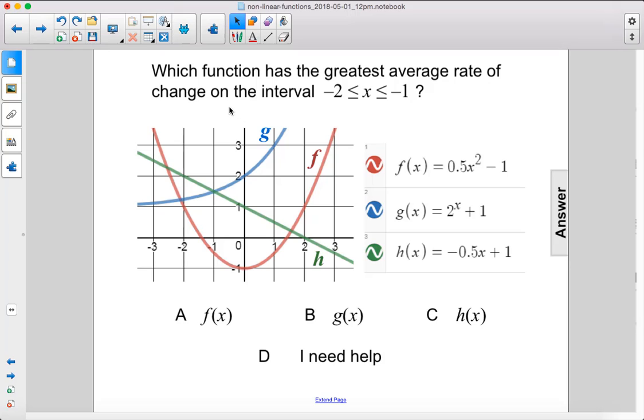Which function has the greatest average rate of change on the interval negative 2 to negative 1? Alright, so from negative 2, which is here, to negative 1, we're just looking at this very small portion.